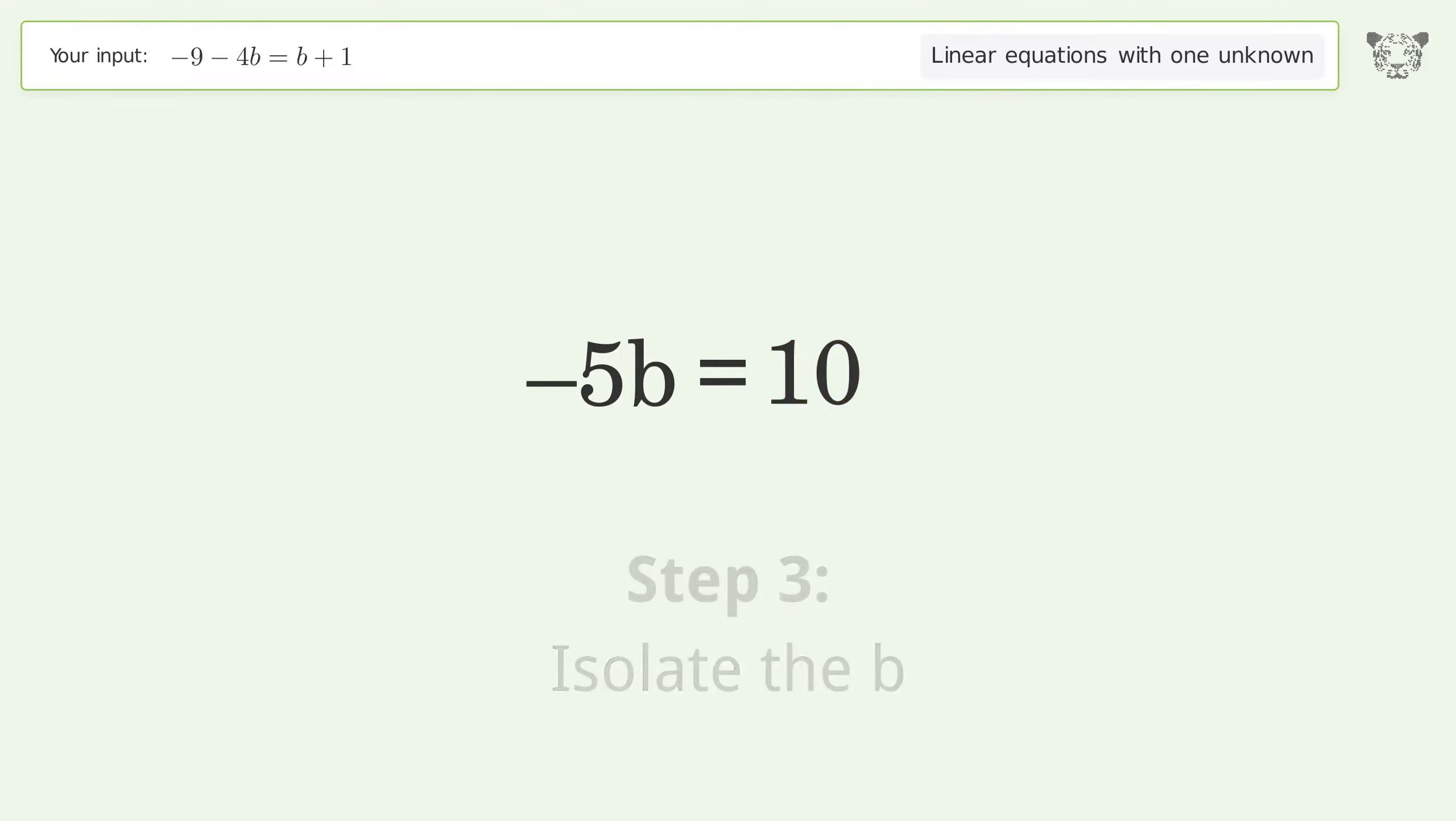Isolate the b. Divide both sides by negative 5. Cancel out the negatives.